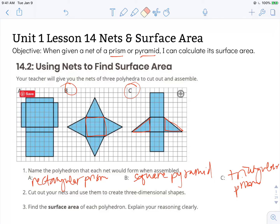Okay, looking at number two, it says cut out your shapes. We're not going to do that. For three, it says find the surface area of each polyhedron. So the surface area is that combined area of all the polygon faces.